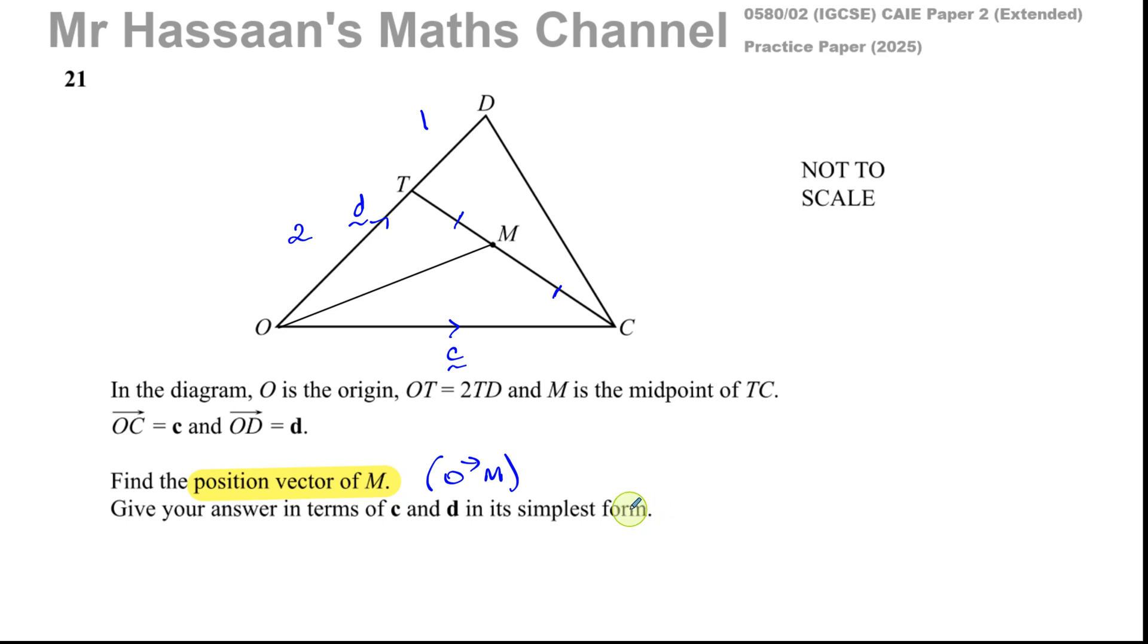So in terms of c and d, of course in the simplest form, we can do this in two ways. We can say O to M, the vector from O to M, is the vector from O to T plus T to M. Or we could go from O to C and then C to M. It really doesn't make too much of a difference. So we can go from O to T and then T to M.